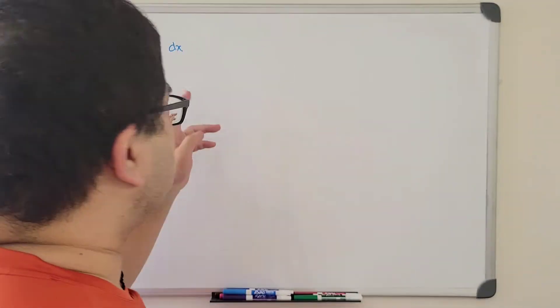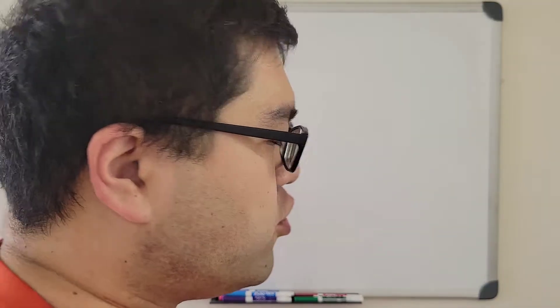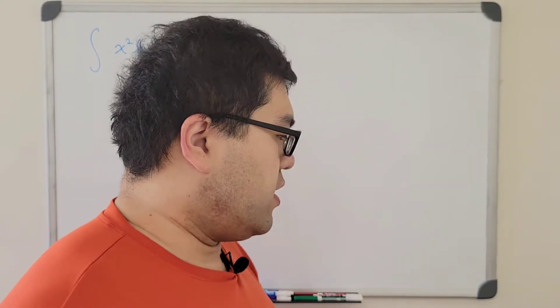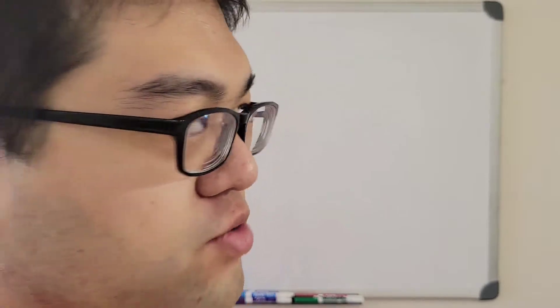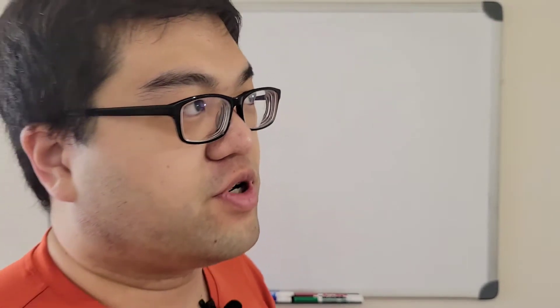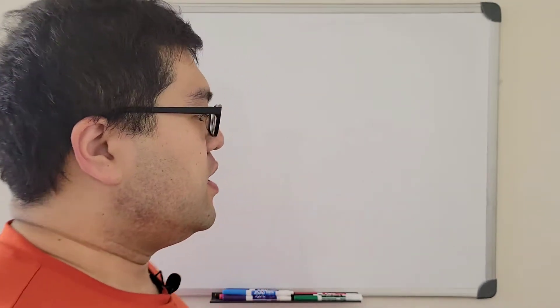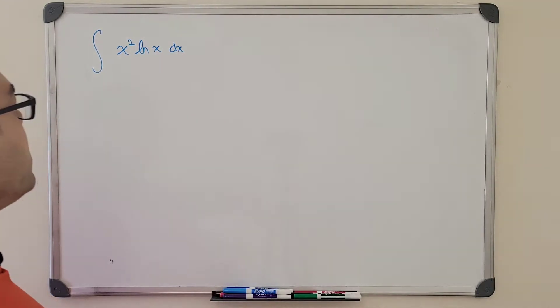Today we're going to look at some calculus problems, and we're going to use the DI method, also known as the RIP integral by parts, or some people just simply call it RIP. So here is our first problem.